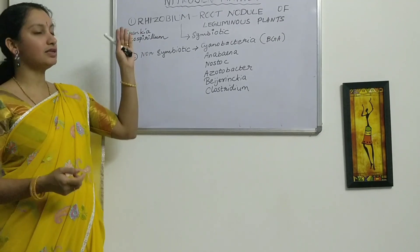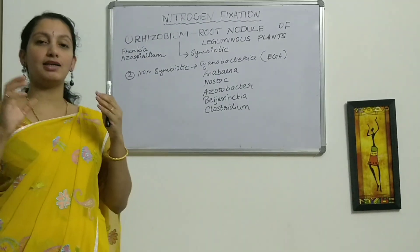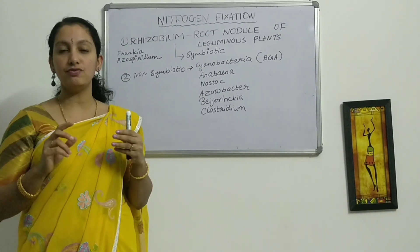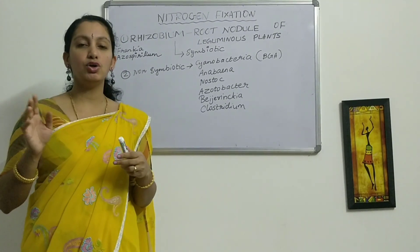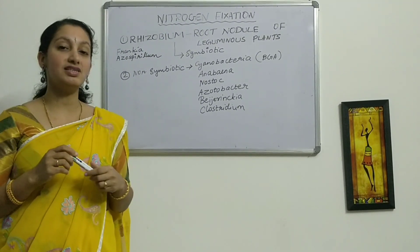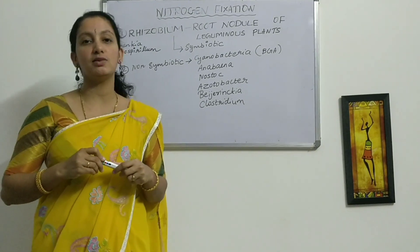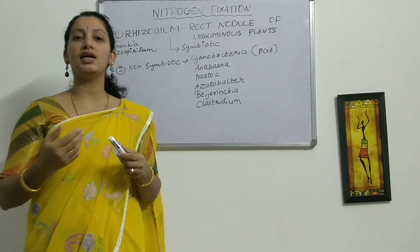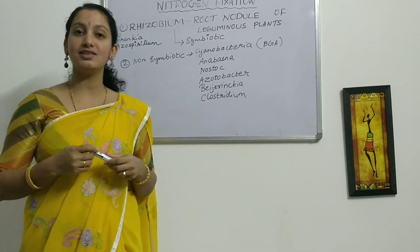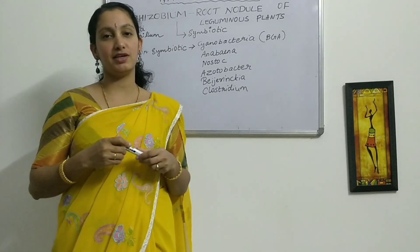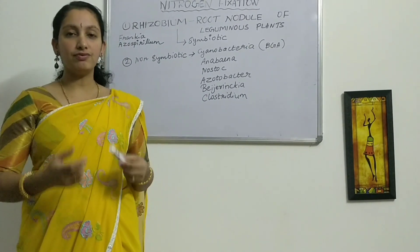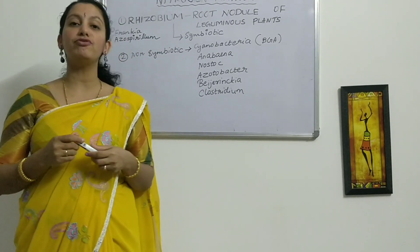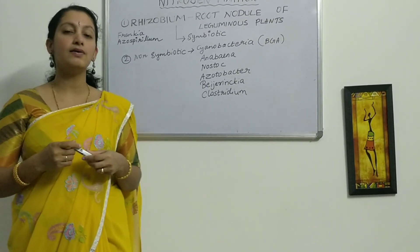Before moving to that, I will give a short introduction about nitrogen fixation and what is the requirement of this nitrogen fixation. You know there is some 78% of nitrogen present in the atmosphere, even though the plant is not able to take that nitrogen directly from the atmosphere. Because of that reason, it requires some nitrogen supplements in the form of fertilizers to be added for its growth.